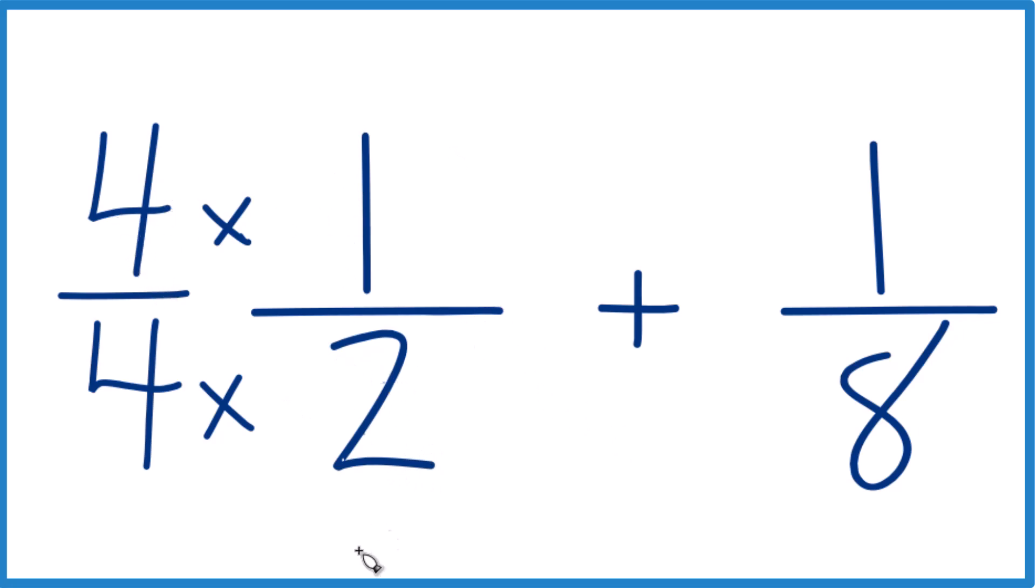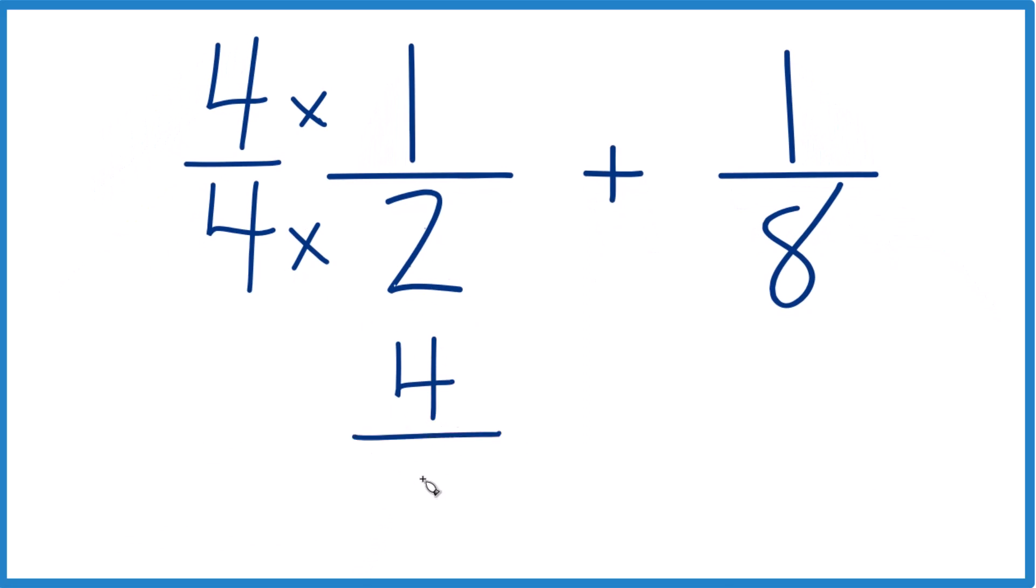Now four times one, that gives us four. Four times two is eight. And four eighths, that's the same as one half. They both equal 0.5.